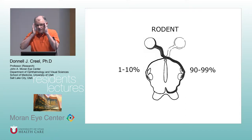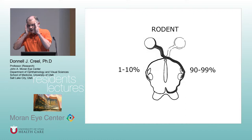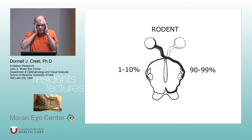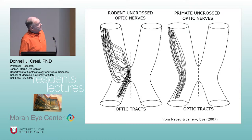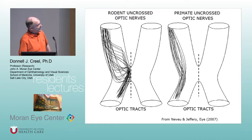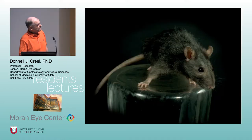The guinea pig's eyes are almost on the sides of their heads, and they only have about 1% or 2% uncrossed fibers. There are differences in what happens at the optic chiasm, but that's more detail than we need to get into here.